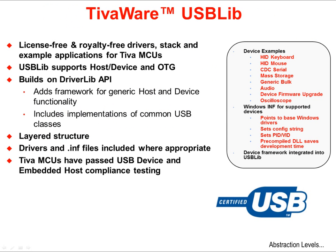TIVAware's USB library supports host, device, and on-the-go operation. It is built on the peripheral driver library's API set. This construction adds a framework for generic host and generic device functionality that you can build on. It includes implementations of common USB classes. The construction of the framework is layered so that the designer can decide on the amount of abstraction they want to utilize. Drivers and INF files have been included where needed. The list on the right shows some of the device examples and supported Windows features included in the USB library. There are also a number of host examples, but since the kit does not include the adapter cable, we will leave those for you to investigate.